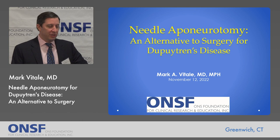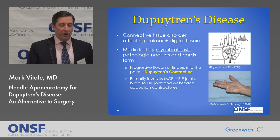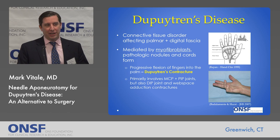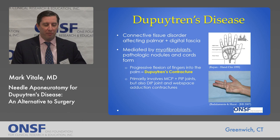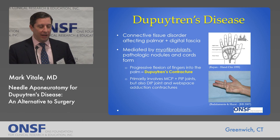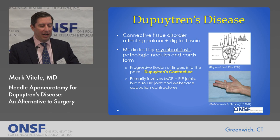Just to briefly review, Dupuytren's disease is an autosomally dominantly inherited connective tissue disorder affecting the fascia on the palm side of the hand and fingers. It's mediated by cells called fibroblasts, which form pathologic nodules and cords in the palm. Although initially these may be small and benign, they can grow in a progressive fashion to curl the fingers into the palm — that's what we call Dupuytren's contracture.